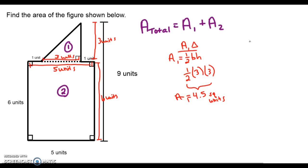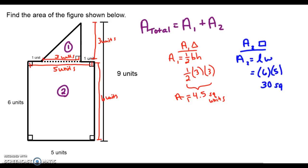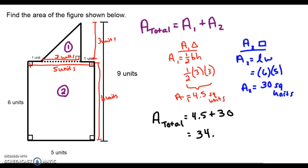Now we just need to find the area of Shape 2, the rectangle. The formula is length times width: the length is 6 units and the width is 5 units, so 6 times 5 is 30 square units. The total area of the compound figure is 4.5 plus 30, which gives us 34.5 square units.